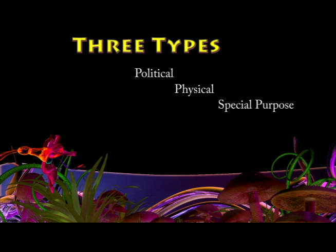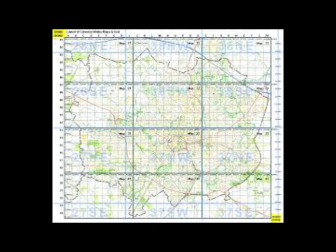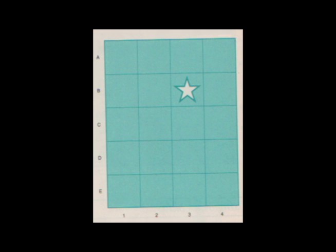You don't need to worry about all the subtypes now. Just know that each type of map fits into one of the three categories: political maps, physical maps, or special purpose maps. Something you will need to understand is a map grid system. A grid is a set of lines used to identify locations on a map. Letters and numbers around the edges of the map label the areas marked off by the lines.